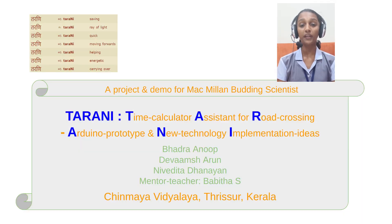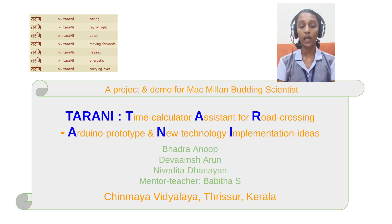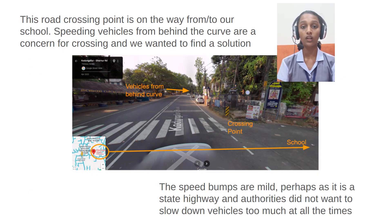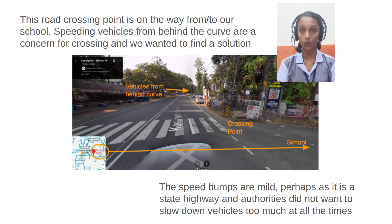Today we are going to present a road crossing assistant and demonstrate the prototype by using Arduino. The motivation for the project is the zebra crossing in front of our school, where the incoming vehicles are not clearly visible as there is a curve in the road.